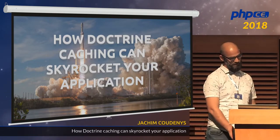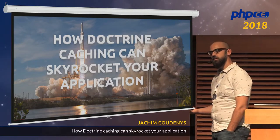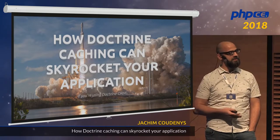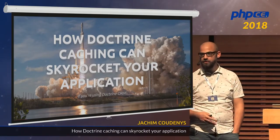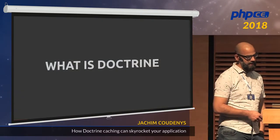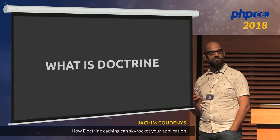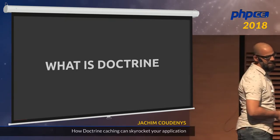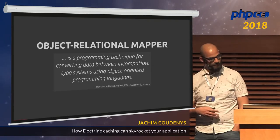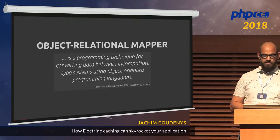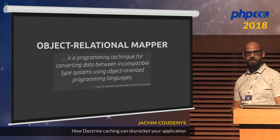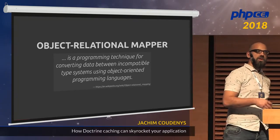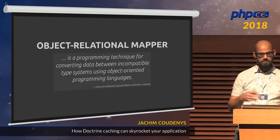This talk is about the internals of Doctrine and caching in Doctrine, and how a combination of the two can skyrocket your application — that is, if you are using Doctrine already. So first off, what is Doctrine? I'd like to start with a question: who is using Doctrine already? Quite a few of you. So you probably know that it's an object-relational mapper, which according to Wikipedia is a programming technique for converting data between incompatible type systems using object-oriented programming languages.